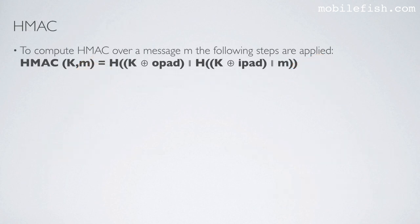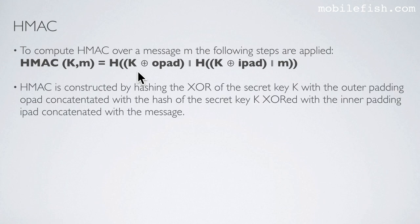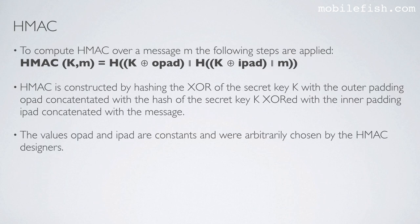To compute HMAC over message M, the following steps are applied. HMAC is constructed by hashing the XOR of the secret key K with the outer padding OPAD, concatenated with the hash of the secret key K XOR with the inner padding IPAD, concatenated with the message. The values OPAD and IPAD are constants arbitrarily chosen by the HMAC designers.